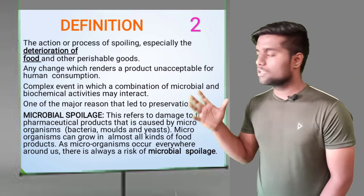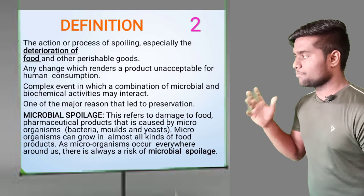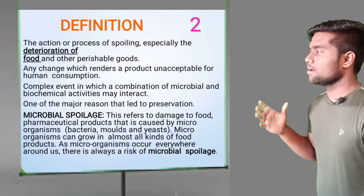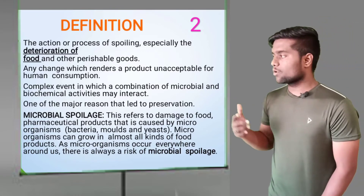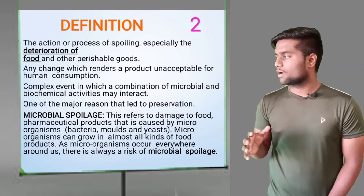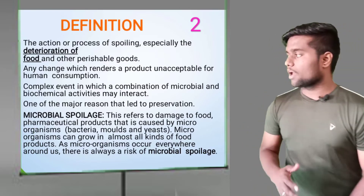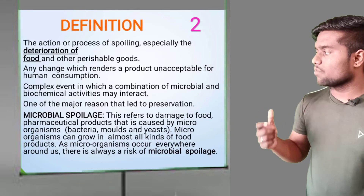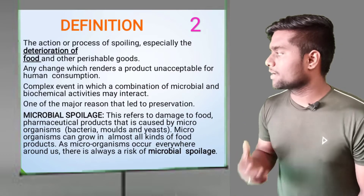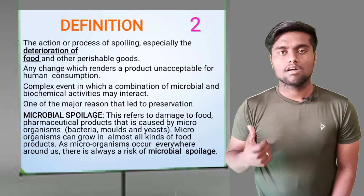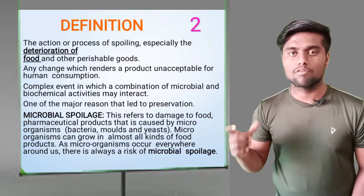First we see microbial spoilage. This refers to the damage to food and pharmaceutical products caused by microorganisms like bacteria, molds, and yeast. Microorganisms can grow in almost all kinds of food products; they are everywhere around us. There is always a risk of microbial spoilage, as bacteria, molds, yeast, and other types of microbes can contaminate products.